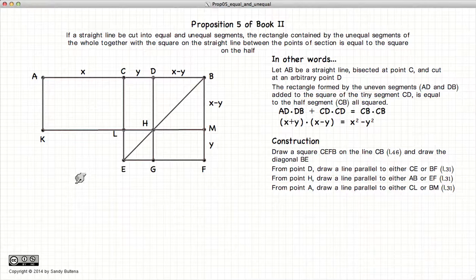Now if you remember from the previous proposition, although it wasn't the proposition, it was proven within the proposition, DM will be equal to DB all squared. This is a square. Similarly, LG will be equal to CD all squared. This was demonstrated in the previous proposition.